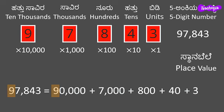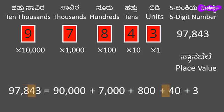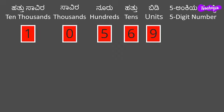The next place is thousands and its digit is 7, so in the expanded form we have 7,000. Next place is tens and its digit is 4, so in the expanded form we have 40. The next place is units and the digit is 3, so in the expanded form we have 3. This is the expanded form of the number. The expanded form of the number is the sum of the place values of the digits in the number.